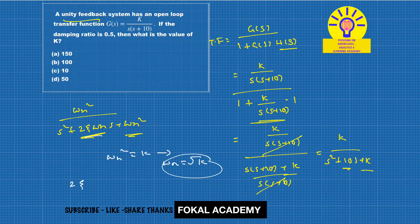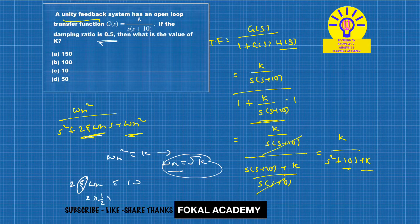Here 2ζωn = 10. Now substitute ωn here and ζ (the damping ratio) is given as 0.5, which is 1/2. So 2×(1/2)×√k = 10. The 2s cancel, so √k = 10, therefore k = 10² = 100.